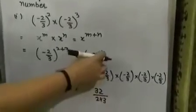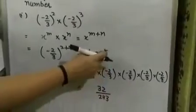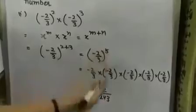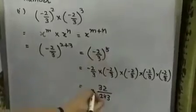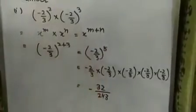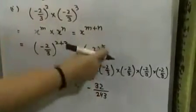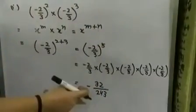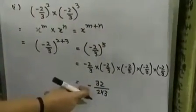Here the number is negative. Look at the power. If the power is an odd number, your result will be negative. If the power is an even number, your result will be a positive number.